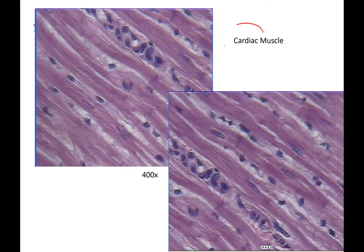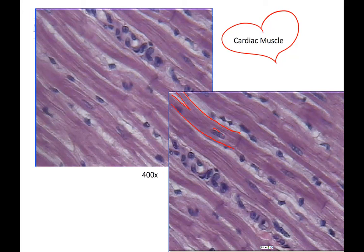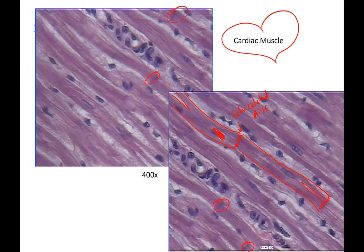The last one to look at is cardiac muscle, which is the muscle of your heart — that's exactly where it's located. These cells have a branched pattern and a single nucleus, similar to smooth muscle. They are also striated, which can be difficult to see but is visible when you look carefully. The key feature here is the connection between cells, called an intercalated disc. If you can identify an intercalated disc, that is your clue that you are looking at cardiac muscle.